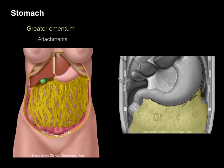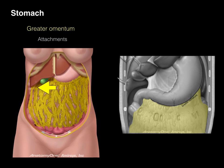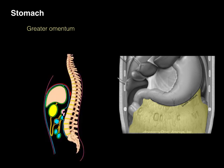Here we have the greater omentum arising from the greater curvature of the stomach, descending down. Then it makes an apron — it loops back up and ascends to attach all along the transverse colon. In a sagittal cartoon, where S is the stomach and TC is the transverse colon, we see the greater omentum arising from the bottom of the stomach, descending down, and looping up to the transverse colon, making this big apron-like structure.